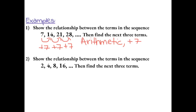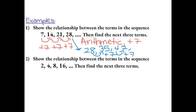To find the next three terms, we take 28 plus 7 to find the next term, which is 35. Then plus 7 again to find the next term, which is 42. And then plus 7 again to find the next term, which is 49.